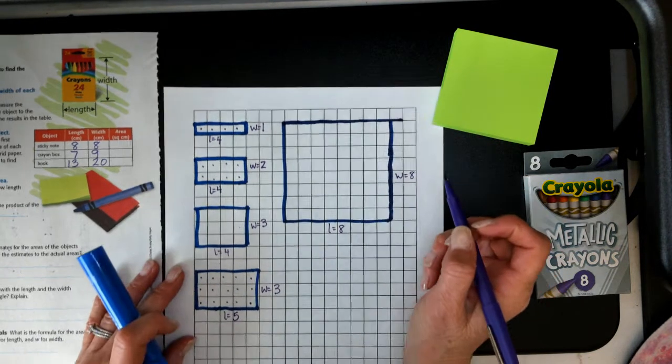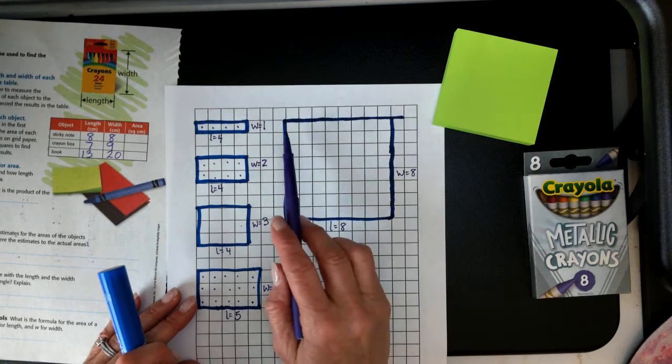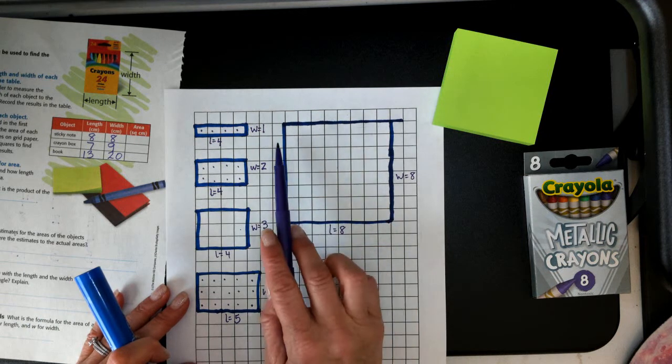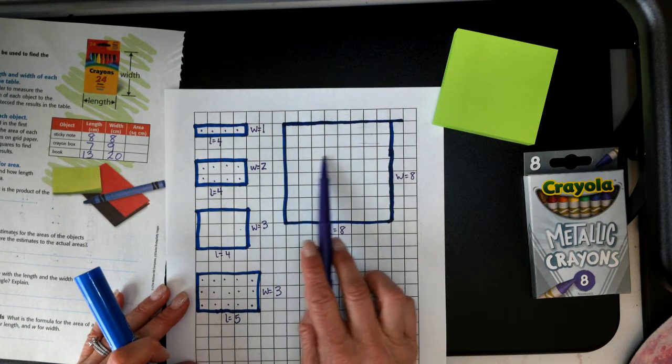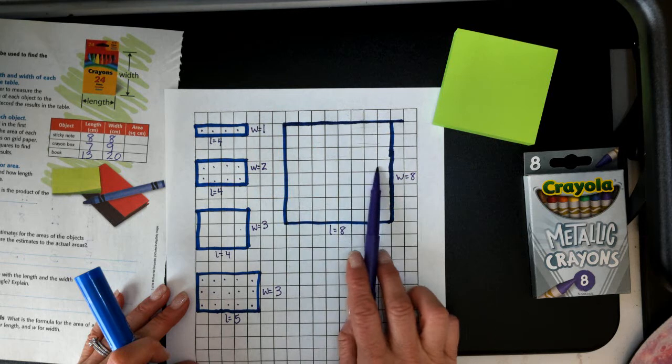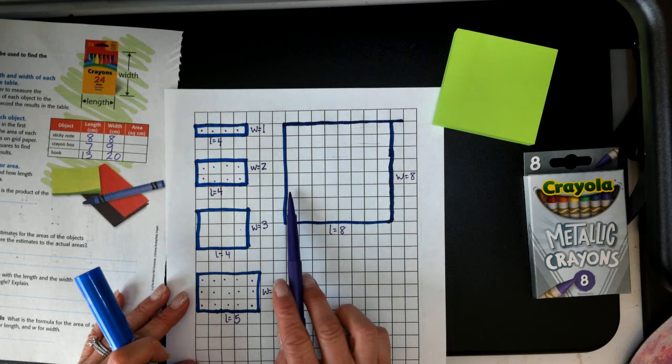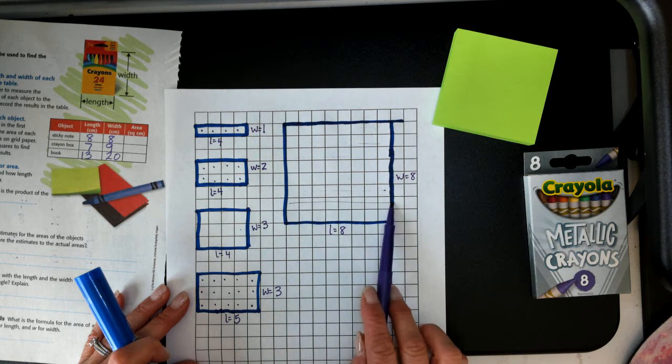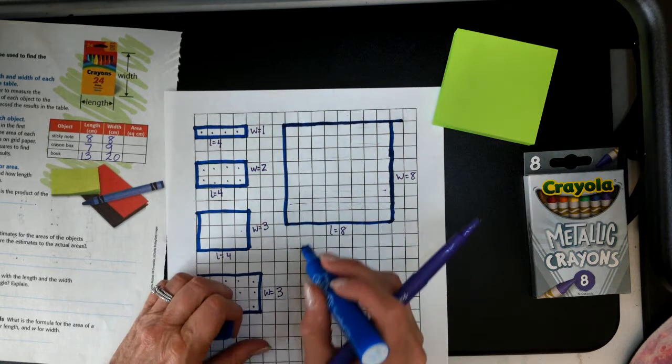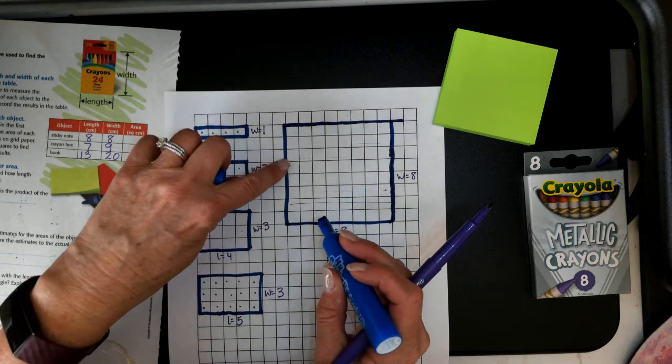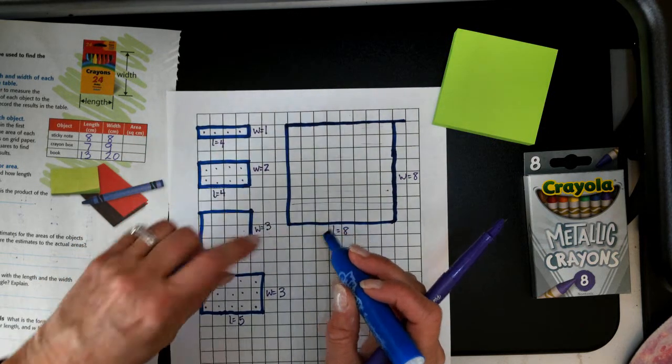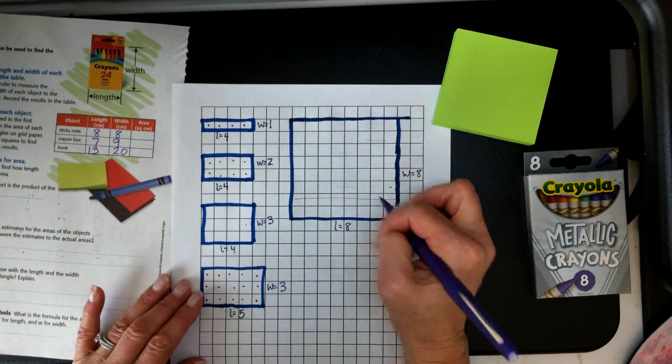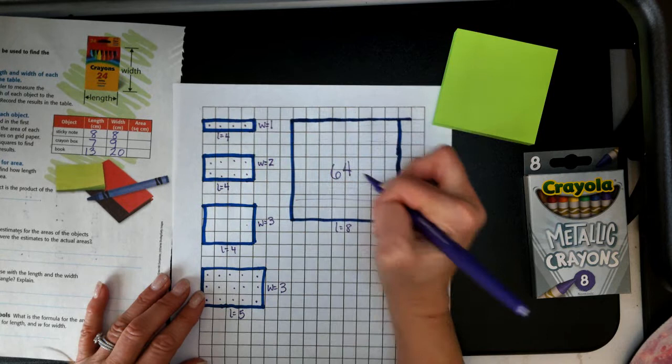And I'm going to count all of these squares. And I'm going to do it really fast because I can count by eight. Eight, sixteen, twenty-four, thirty-two, forty-eight, fifty-six, sixty-four. I did an extra row. So we have a total of sixty-four units.